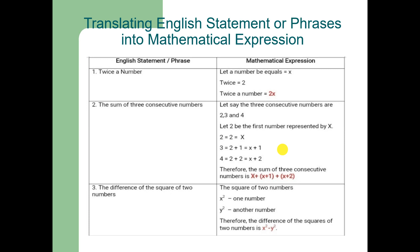Let us suppose the English phrase is 'twice a number.' How can we write that mathematically? Let us suppose there is a number which equals x. Twice is equal to 2, so twice a number will be equal to 2x. Therefore, 2x is the mathematical expression of the English phrase 'twice a number.'